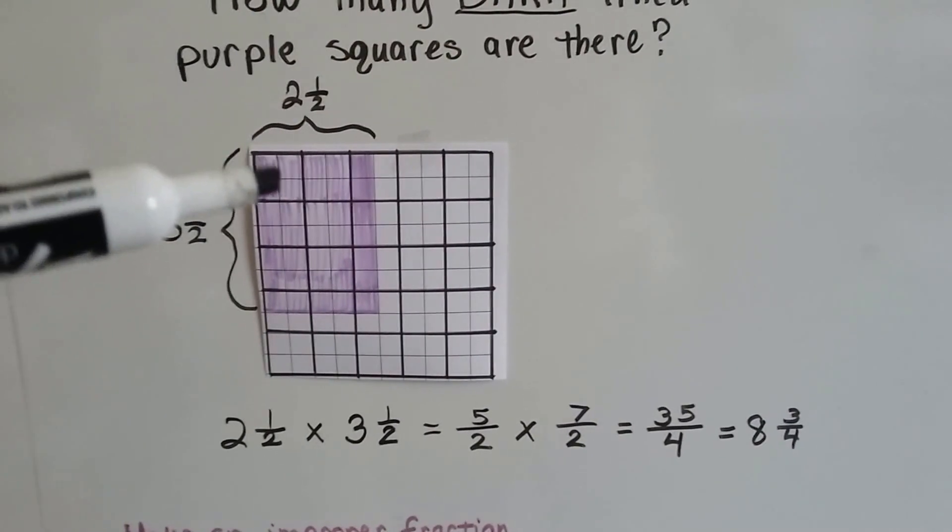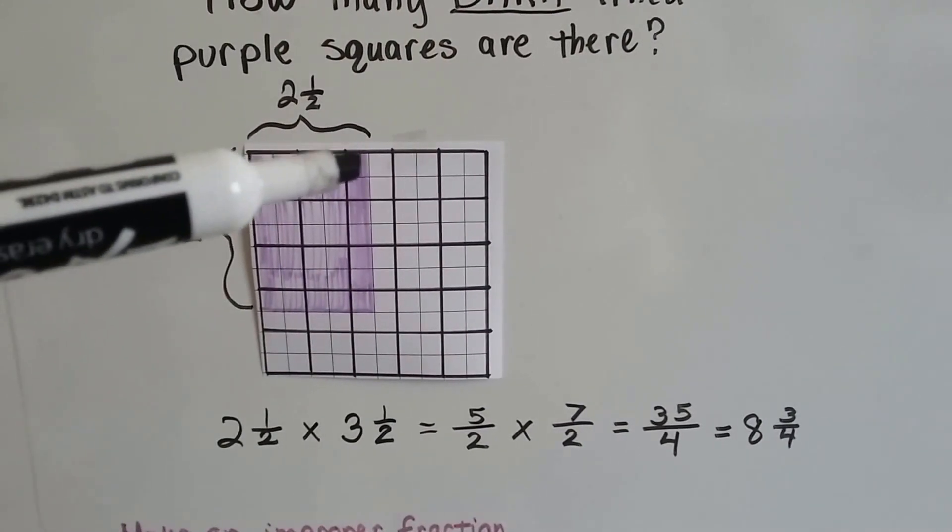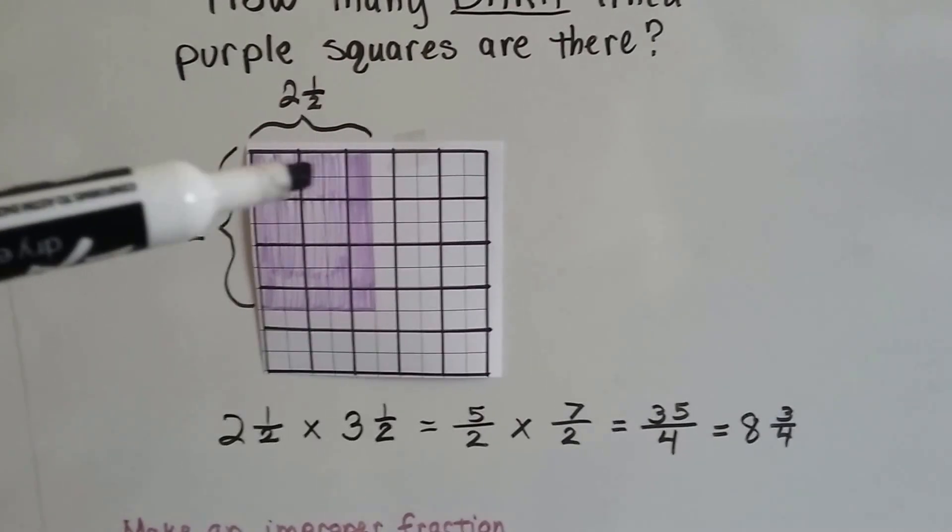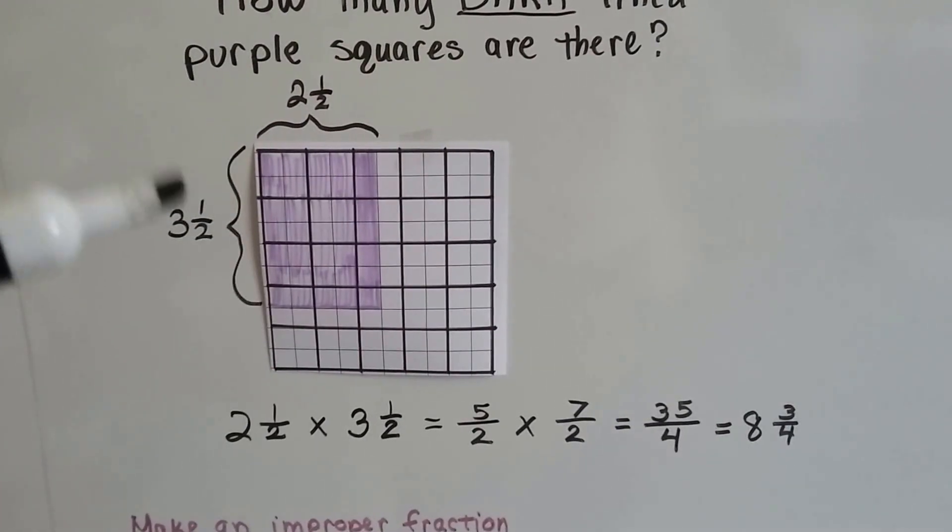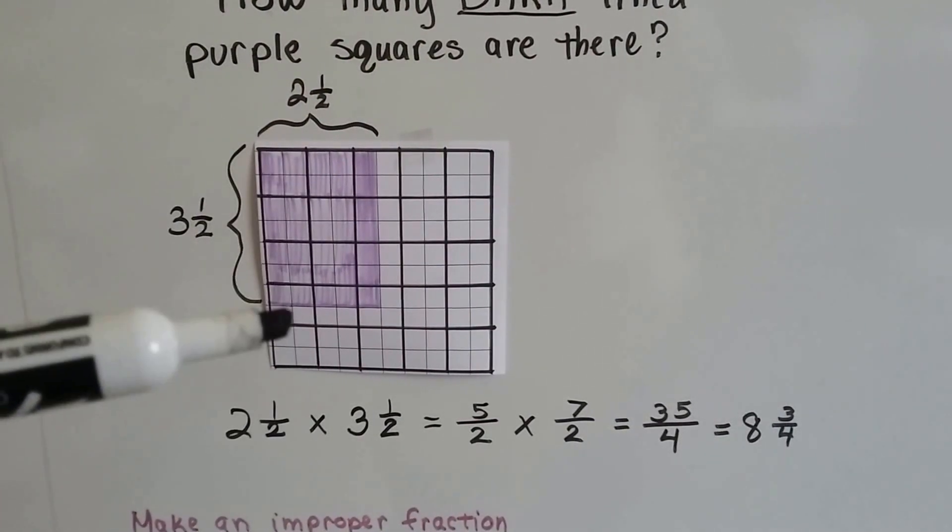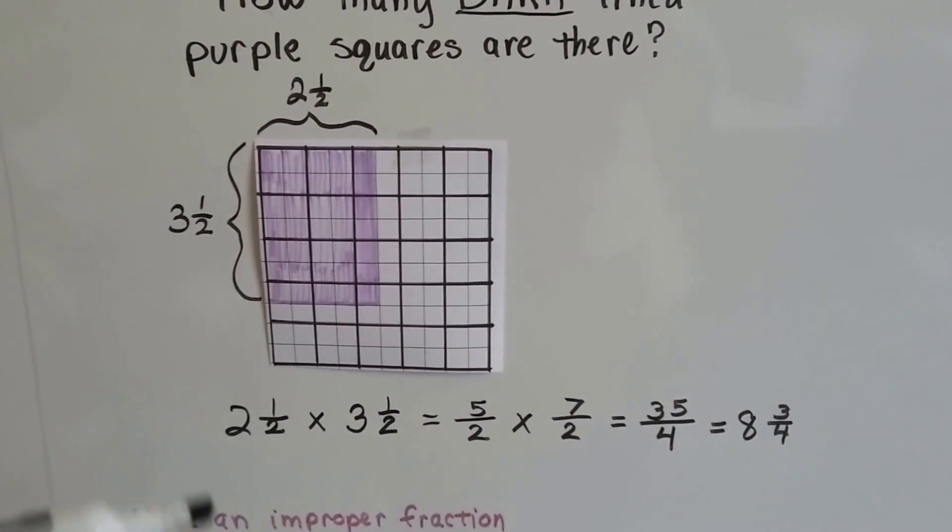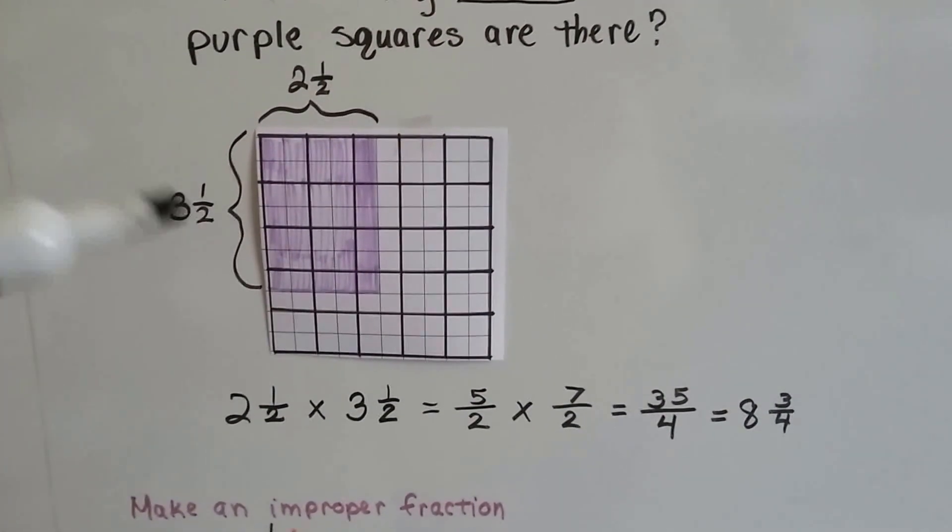And we've got one full, two, two and a half squares that are purple here. Then we've got one, two, three and a half squares that are purple going this way. So we can do two and a half times three and a half.